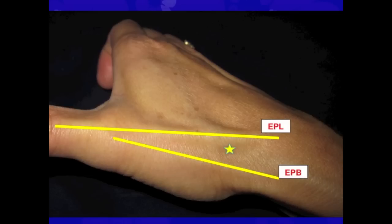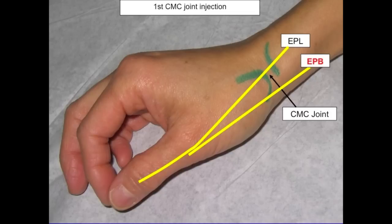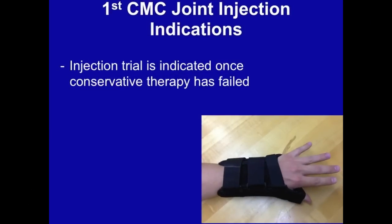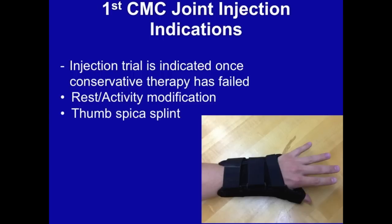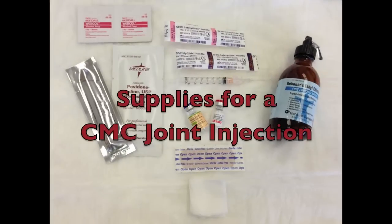The CMC joint is more easily palpated and injected when the thumb is in a neutral position. Inject on the ulnar side of the extensor pollicis brevis tendon to avoid the radial artery. Mark your injection site with a pen or needle cap so that it's visible even after prepping. A trial of CMC joint injection is indicated once conservative therapy has failed, including rest, activity modification, a thumb spica splint, and use of NSAIDs, ice, and heat.